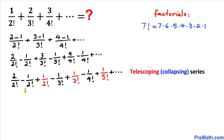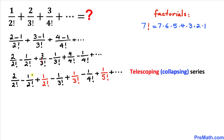We can now see pairs of similar fractions with opposite signs that cancel each other out. These two cancel, the next two cancel, and this pattern repeats itself indefinitely. No wonder we call this kind of series a telescoping, or sometimes a collapsing, series.